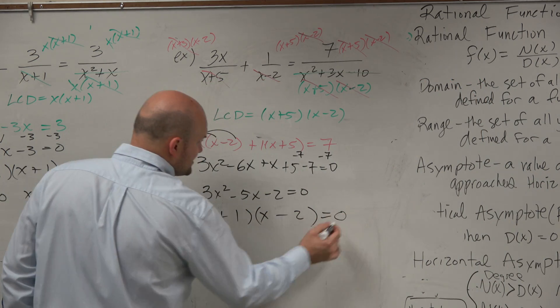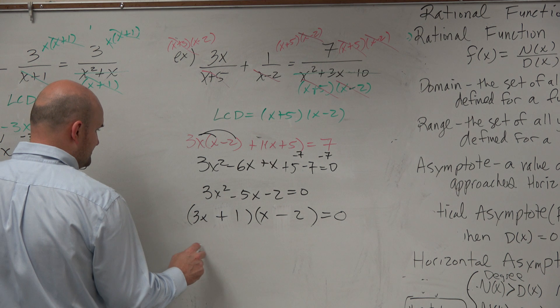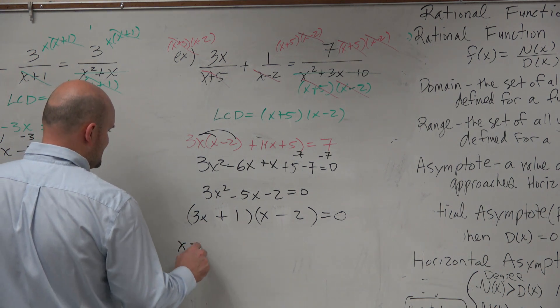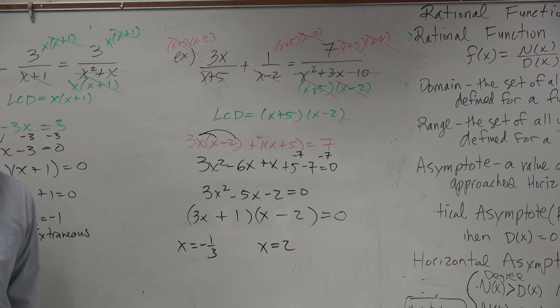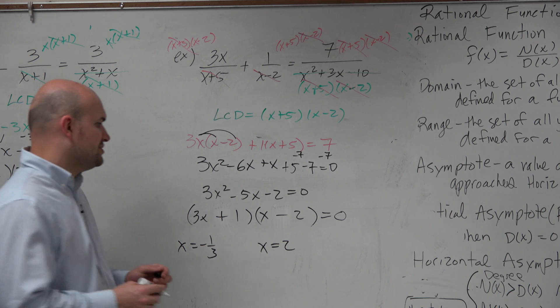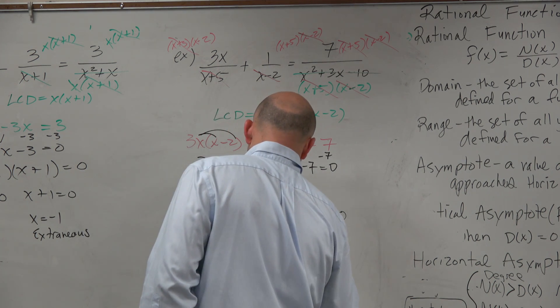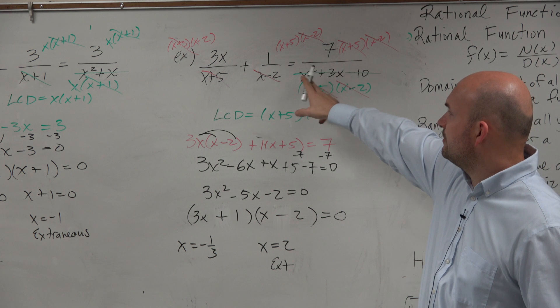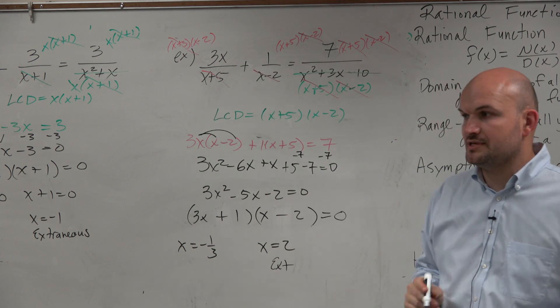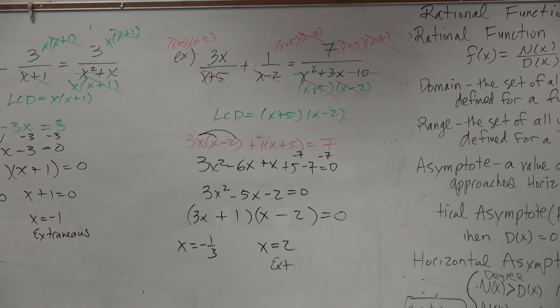So now, since it's equal to 0, I can apply the zero product property. x equals negative 1 third. x equals 2. Should I walk away? No, because 2 is extraneous. Why is 2 extraneous? Because when I plug 2 back into my equation, you can see that it makes the denominator equal to 0. All right. Wow. Whew.